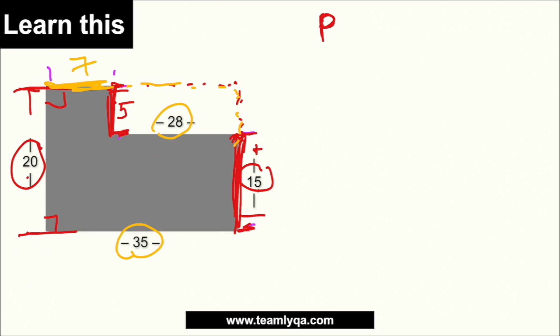So, ngayon, alam ko na, na itong side na ito ay 7, ito ay 5. So, kung inahana po yung perimeter, all I have to do na would be to add everything. So, i-add ko lang yung 7, 5, 28, 15, 35, at 20.